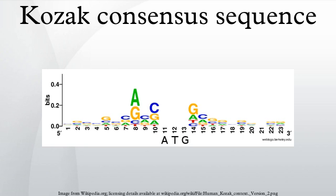In vivo, this site is often not matched exactly on different mRNAs, and the amount of protein synthesized from a given mRNA is dependent on the strength of the Kozak sequence.